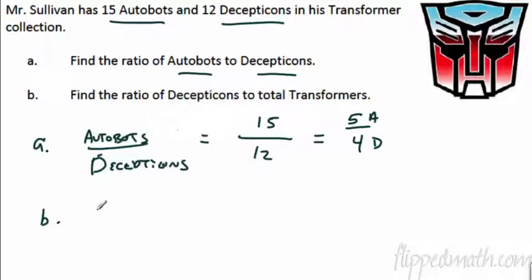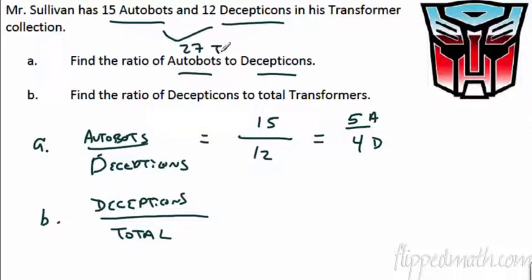Let's do part b. Find the ratio of Decepticons to total transformers. So I'm going to write the word total there. They don't actually tell you the total, but they do. Huh? Put these two together. What do you get? Total transformers here. We have 27 total.